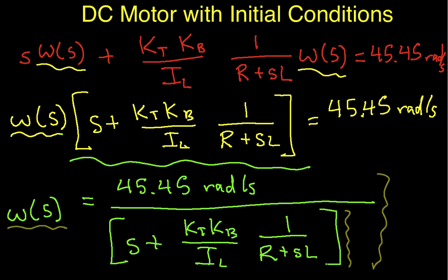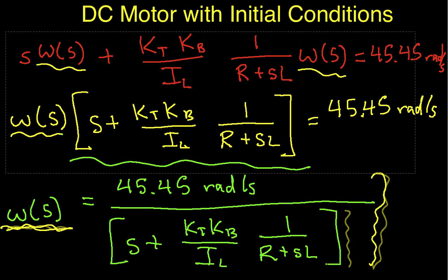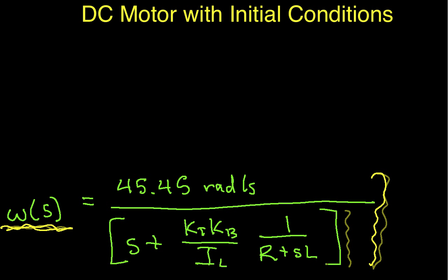Okay, so in the previous video we started analyzing the DC motor with non-zero initial conditions and we got to the point where Omega S is given by this big potentially ugly expression. It turns out it's not that bad. I want to demonstrate that. So I'll do that by first cleaning off a bit of space and then we'll look at this equation.